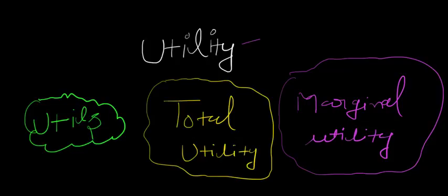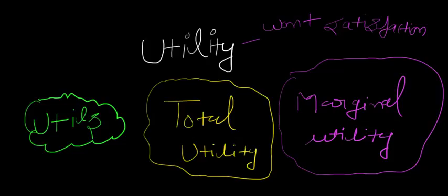What exactly does want satisfaction mean? Suppose you are very hungry and you need to have something, and you go out and have a burger. Now that burger gives you want satisfaction, and therefore the burger has utility to you. But is it really possible to measure utility? Practically, no. But in economics, yes. In economics we will be measuring utility in utils — the unit of measuring utility is utils.